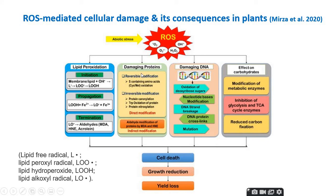DNA damage includes oxidation of deoxyribose sugars, modifications in nucleotide bases, strand breaks, cross-links, and mutations. In carbohydrates, ROS modify metabolic enzymes, inhibit glycolysis and TCA cycle enzymes, and reduce carbon fixation.